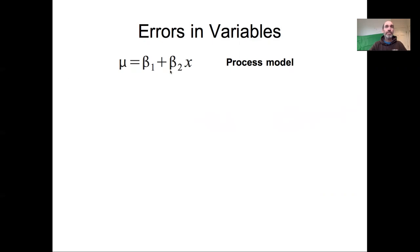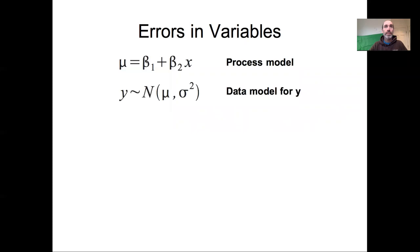To start off, let's think about our classic regression model. Our expected value involves some intercept plus some slope times X. The errors-in-variables framework can be applied to any model, not just linear models. On top of this process model we would have a data model. We'll start with our traditional assumption that Y is normally distributed around the expected value mu with constant variance sigma squared.